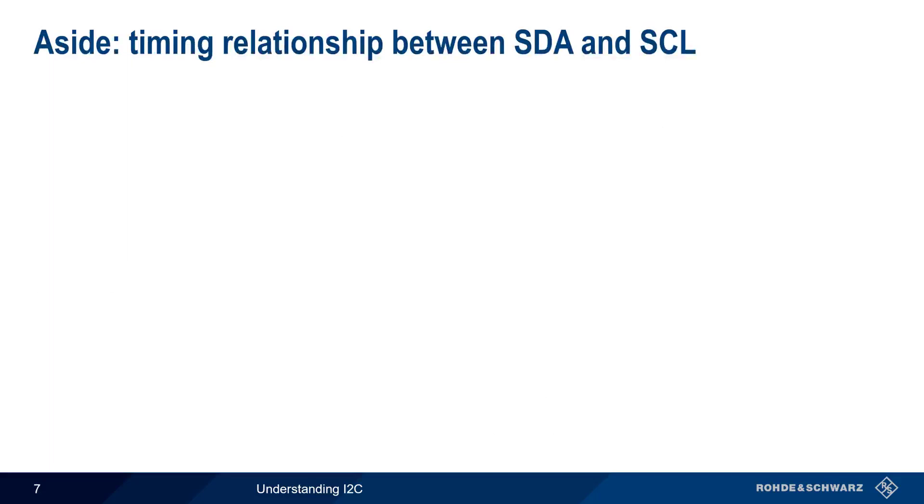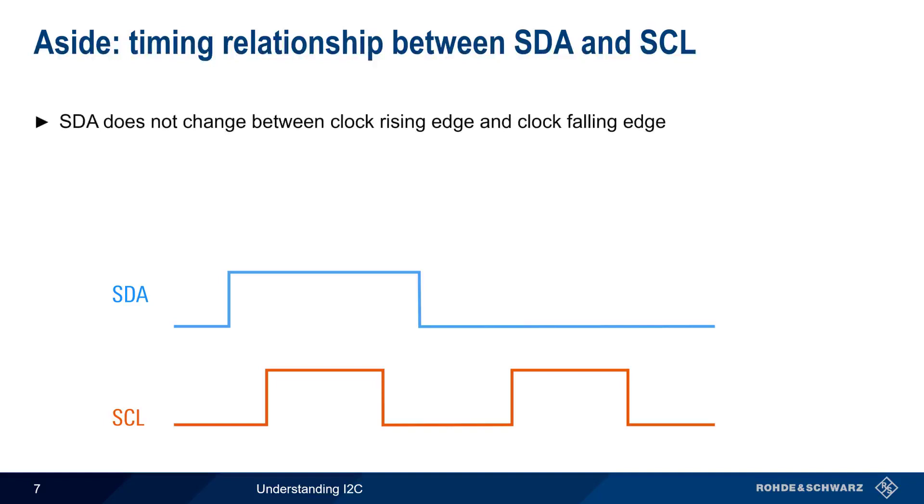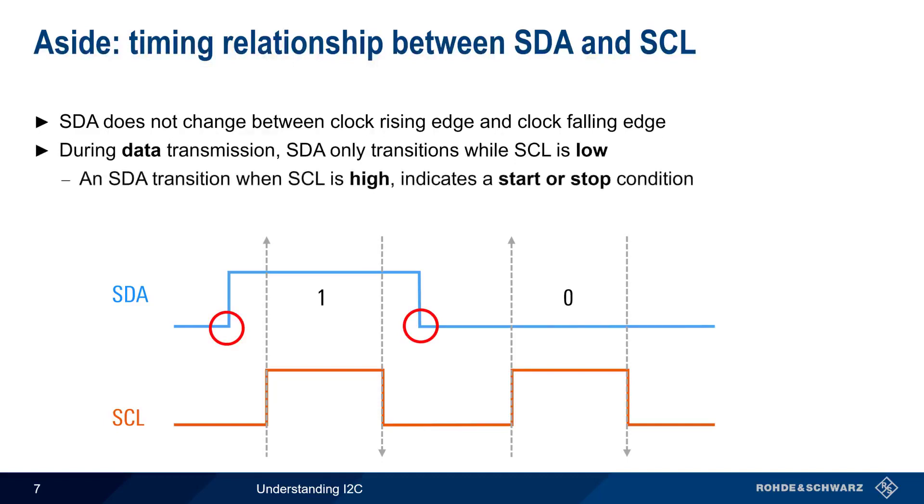At this point it would be a good idea to pause for a moment to talk about the timing relationship between the data and clock lines in I2C. In this diagram, we can see that SDA does not change between the rising and the falling edges of the clock signal. Data is always read during the middle of the clock pulse. Expressed another way, we can say that during data transmission, SDA only transitions when the clock is low. This is necessary because an SDA transition when the clock is high would indicate the start or stop conditions.